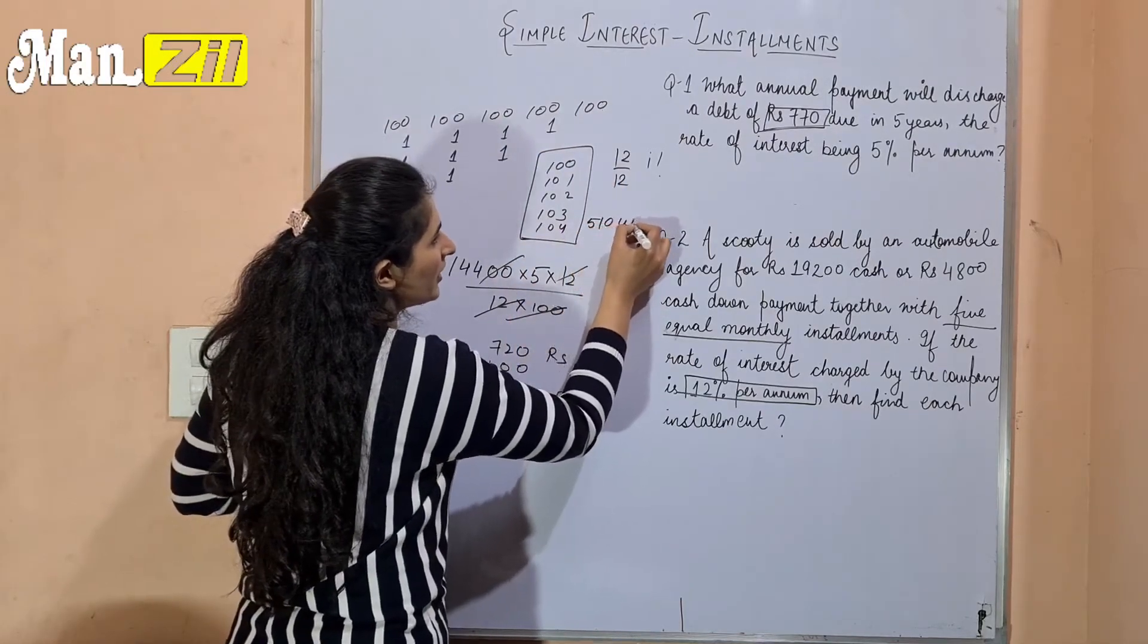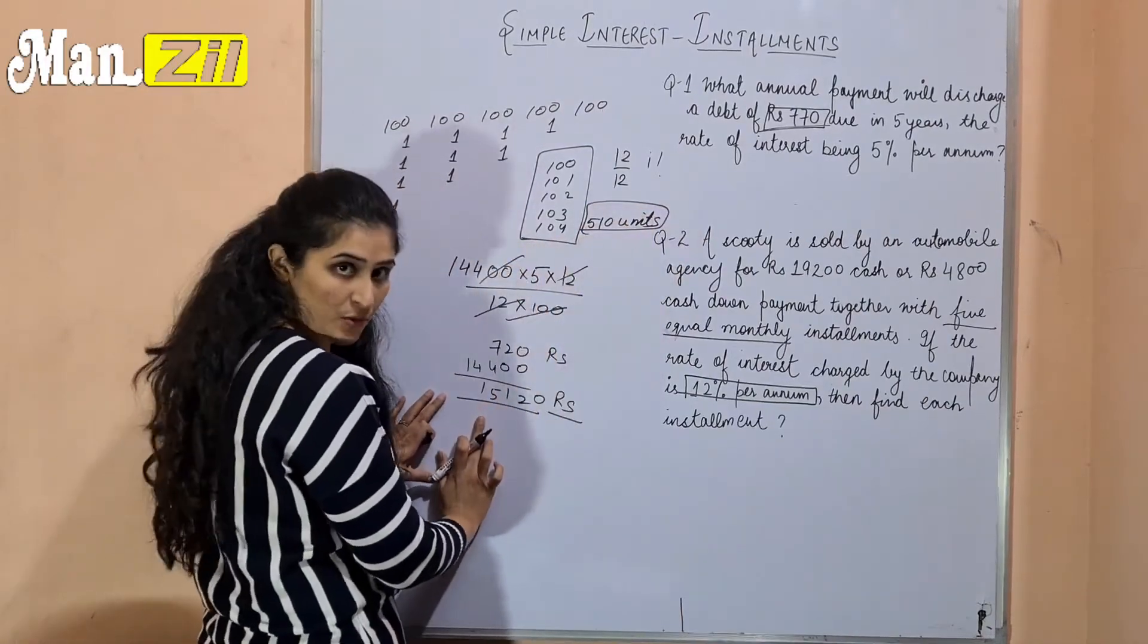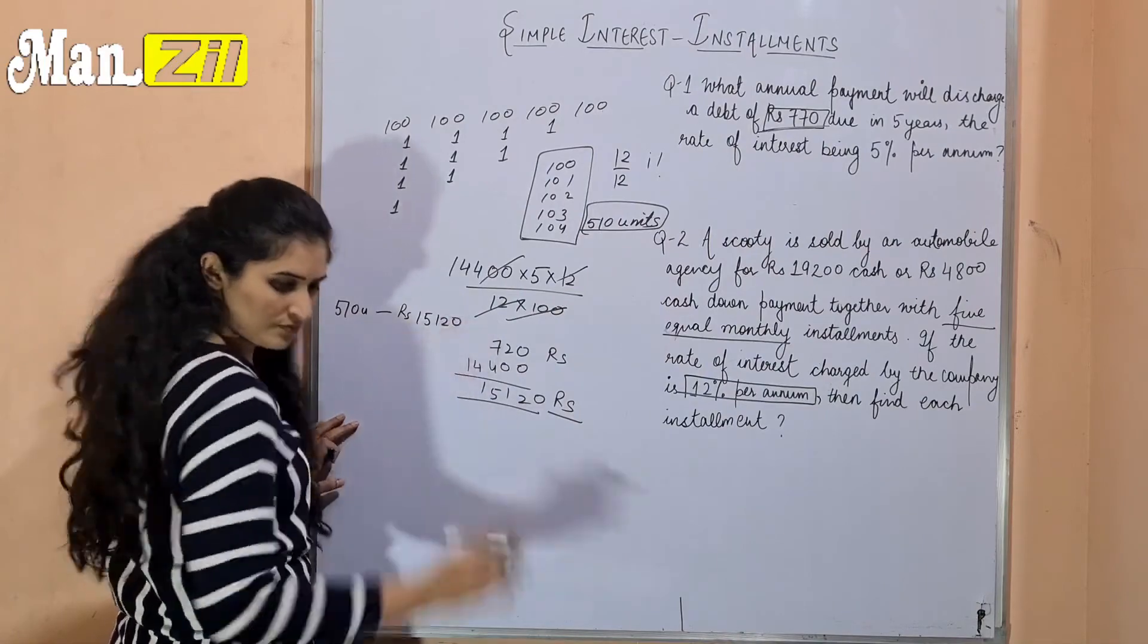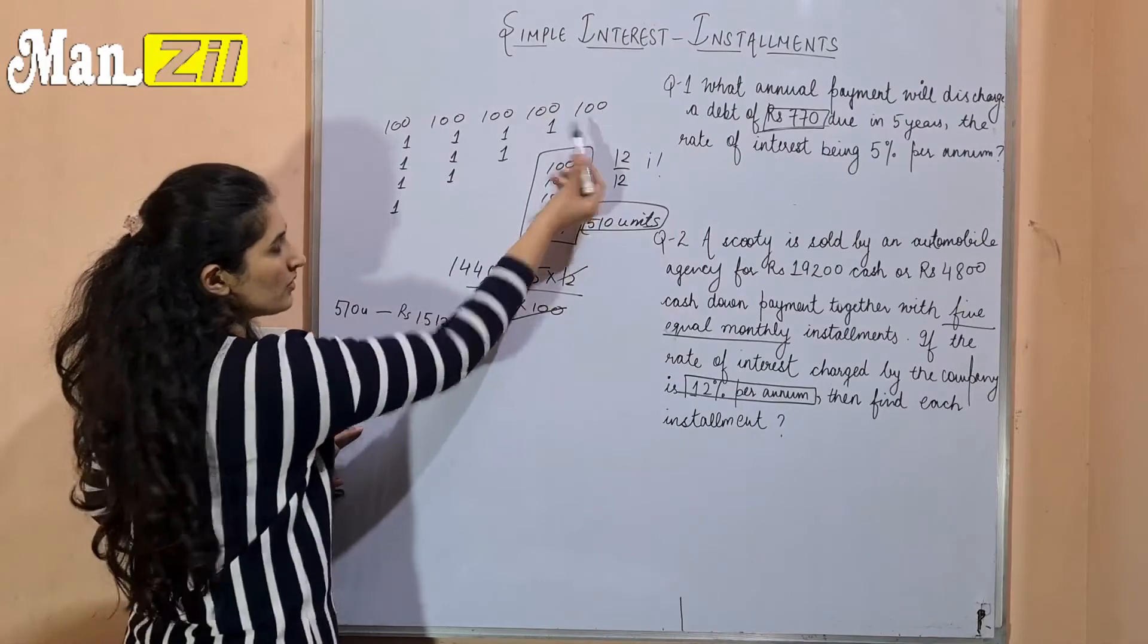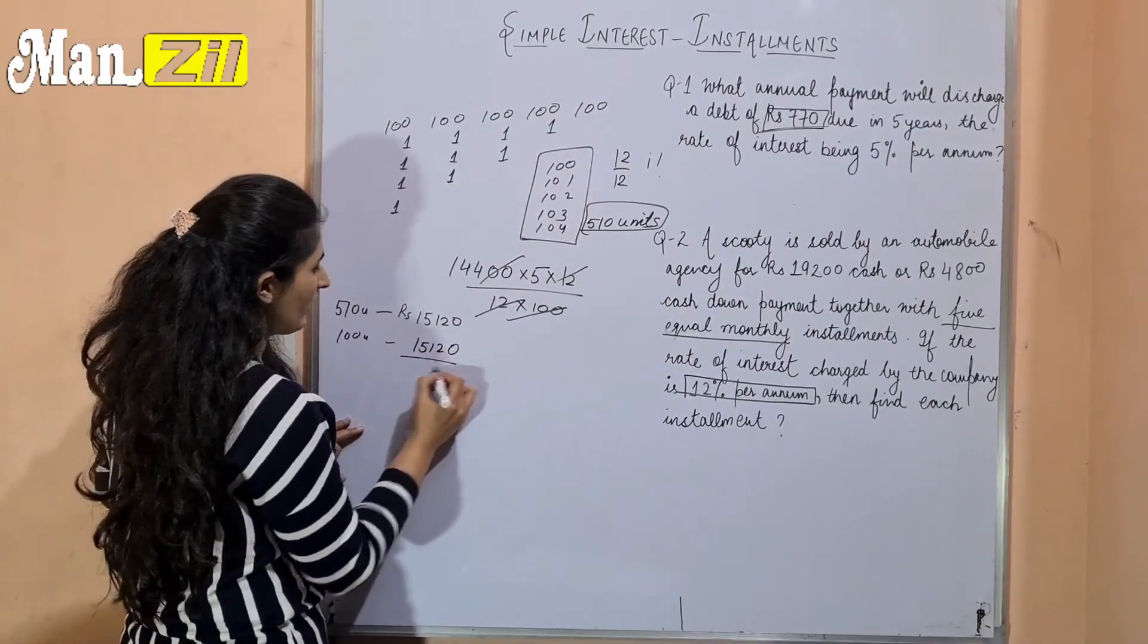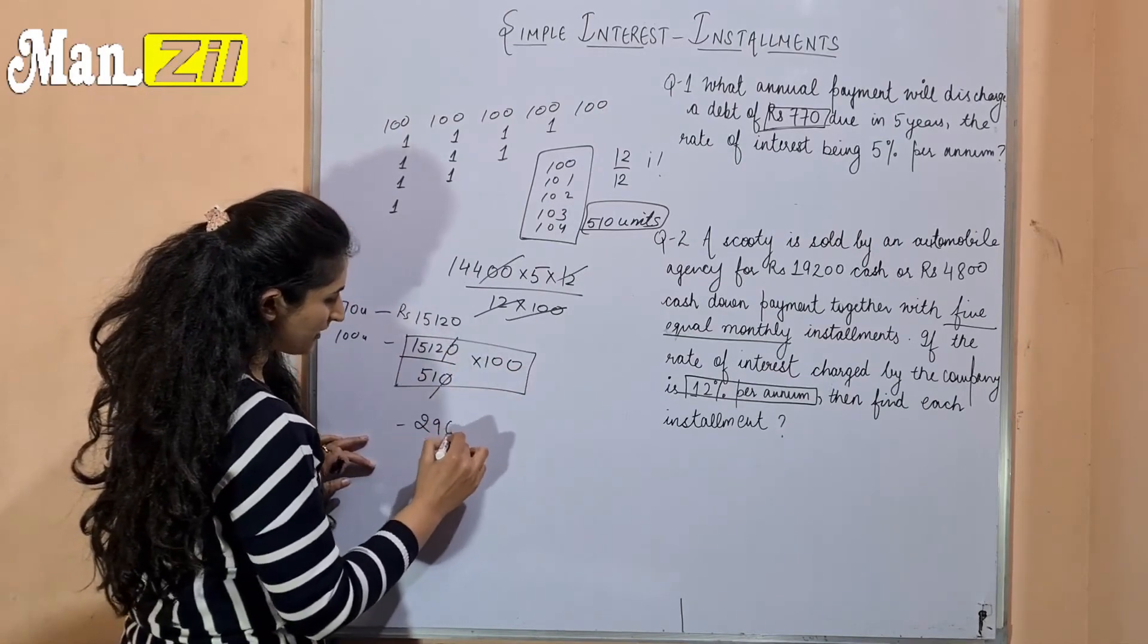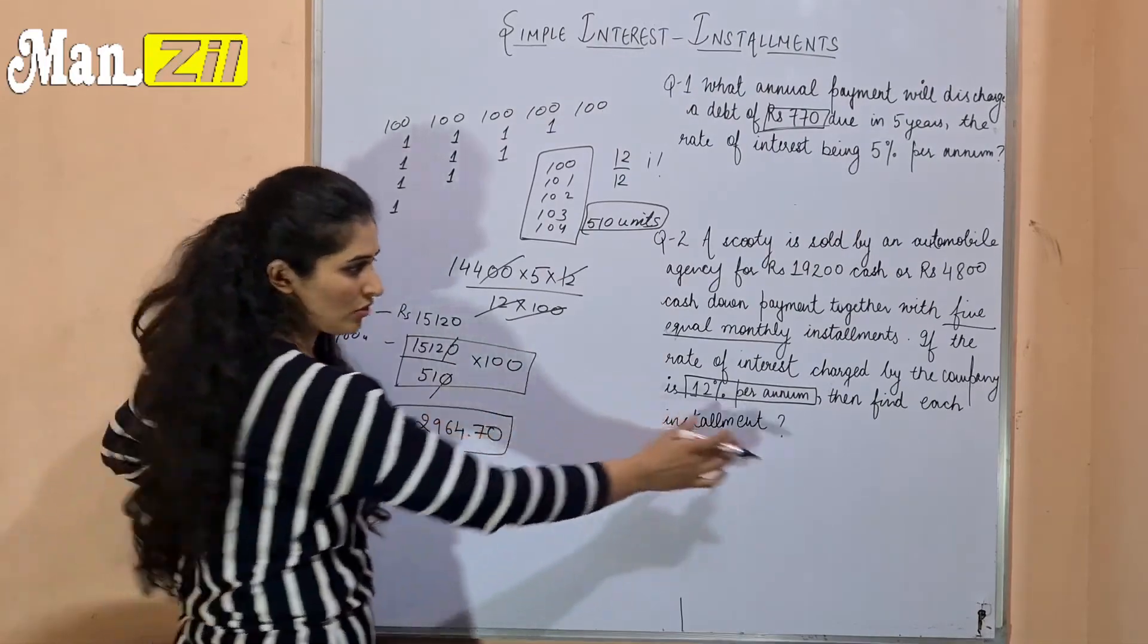This is my amount in units, and this is my amount in rupees. Now I will equate this: 510 units equals Rs. 15,120. So 15,120 divided by 510 times 100. When you solve it, this will be 2,964.70. This is my installment which will be my final answer.